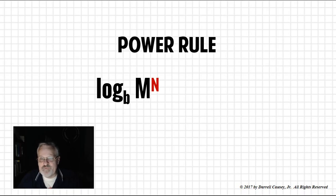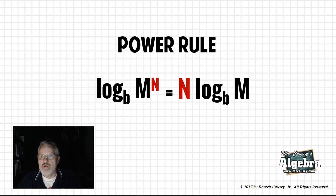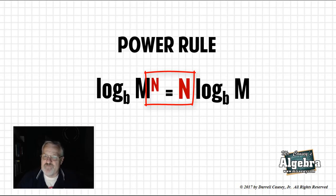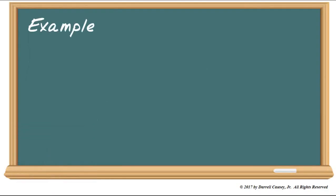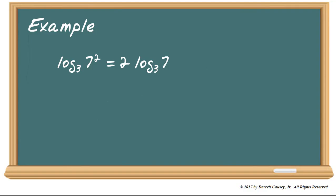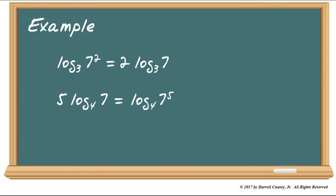Now the power rule. Log b(m) to the n power is going to equal n times log b(m). Notice that the power can come out and be the coefficient. This makes total sense if you remember your rules from exponents. Let's look at an example: log base 3 of 7 squared — we can move that 2 to the front and get 2 times log base 3 of 7. Or, we have 5 times log base 4 of 7. That 5 can go up and be 7 to the 5th power, and we have log base 4 of 7 to the 5th power. It works both ways and can be very useful when simplifying log equations.